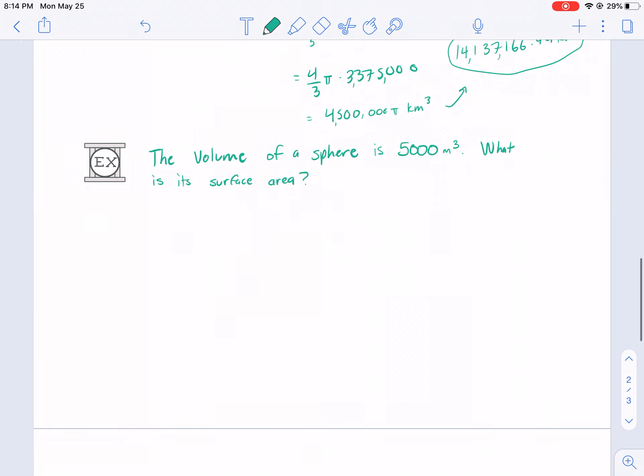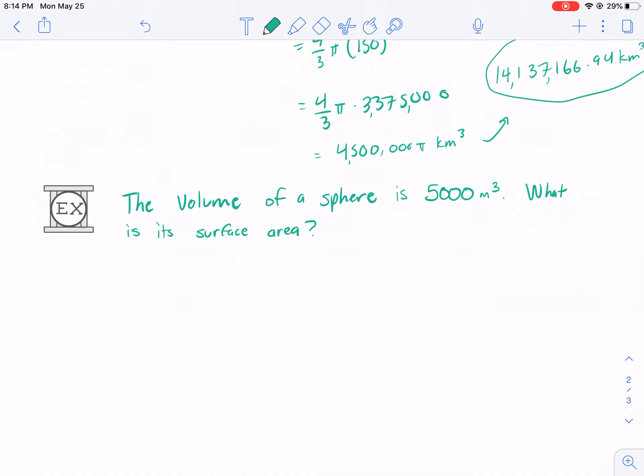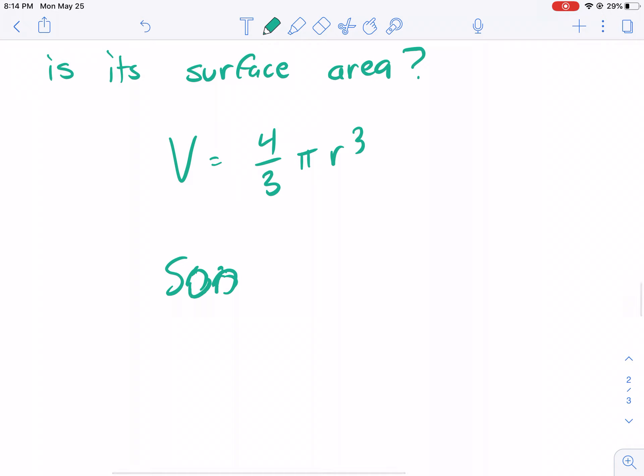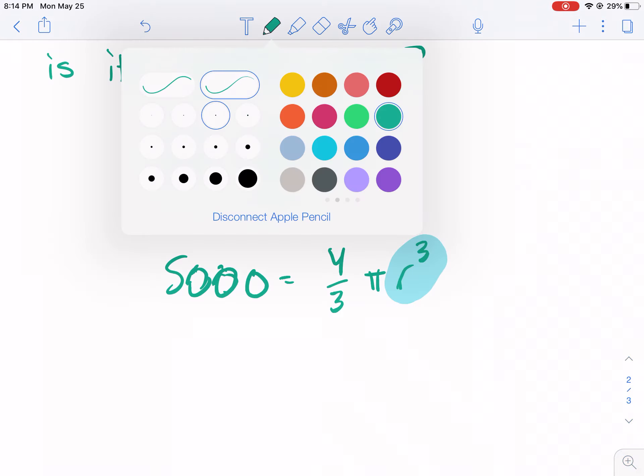The volume of a sphere is 5,000 meters cubed. What is the surface area? Now, we're going to be working backwards. We know that volume is equal to four over three pi r cubed. So, we know our volume. 5,000 equals four over three pi r cubed. Now, what we're trying to do here is we're trying to solve for r. So, we need to get the r by itself. We're going to use a little bit of algebra here.